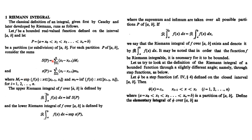These upper sums and lower sums may vary with respect to the partition P. The Riemann upper integral is the infimum of all upper sums with respect to the partition P. Similarly, the lower Riemann integral of f over [a,b] is the supremum of all the lower sums.